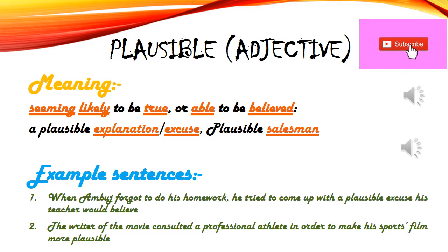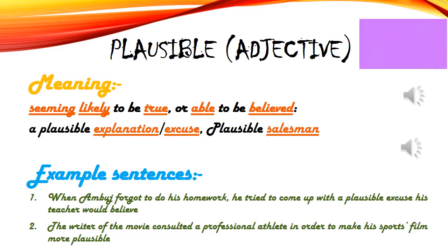Plausible salesman: agar salesman jo hume koi baat kehte hain, jaise 'This dress is very perfect for you, it looks wonderful on you,' hume unki baat mein bahut sincerity aur honesty lagti hai, bhale hi wo sahih nahi bhi hota. Sometimes we try the same dress at home and find it not so perfect. Toh us salesman ya us person ko hum plausible person, plausible salesman, plausible friend, or plausible relative kehenge.